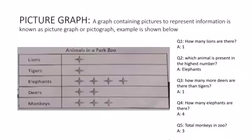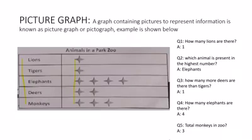Let's have a look at the picture here and see what information we can take out from it. In this picture we have two columns. In the first column we can see the names of animals, and in another column we can see the number of animals. On the right we have some questions. Let's go through these questions.